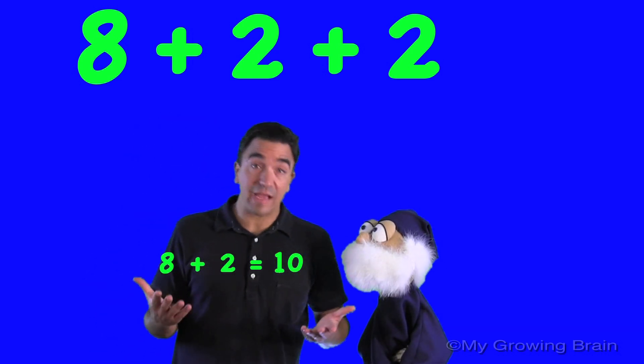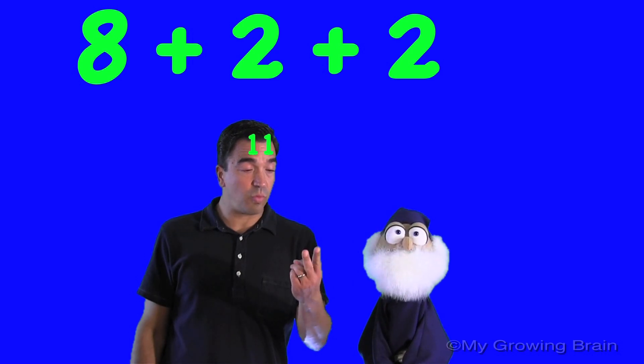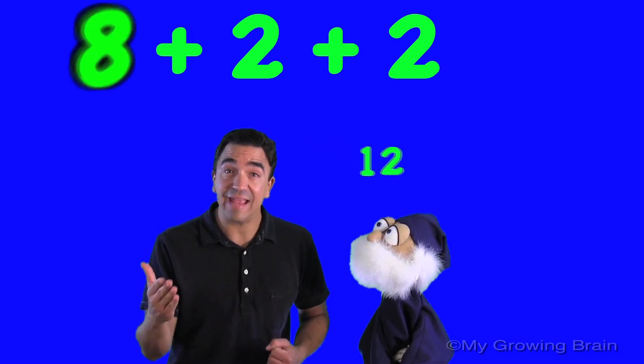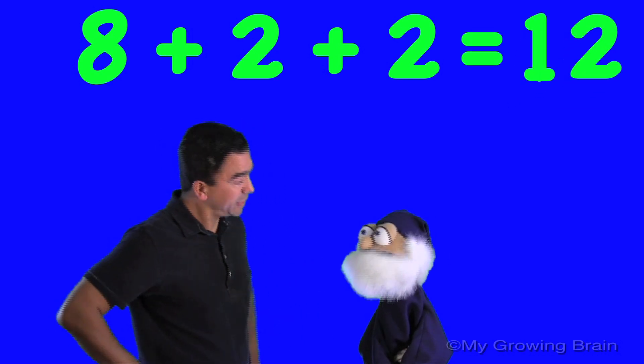Now we have to add the second two. So we have ten in our head, count up two, eleven, twelve. So, eight plus two plus two equals twelve. That's right, Coach Mike.